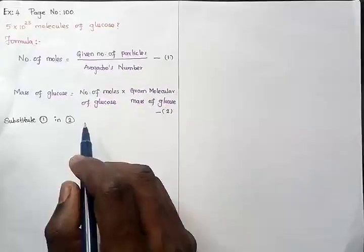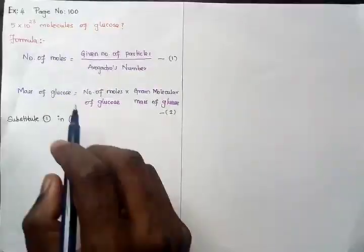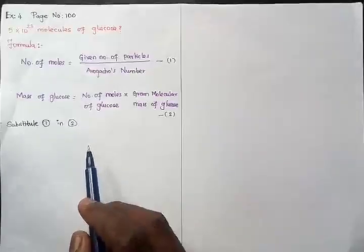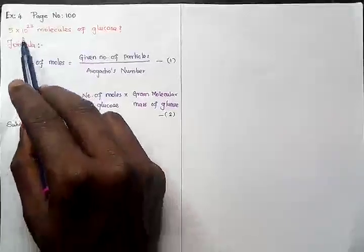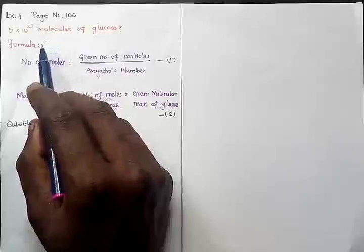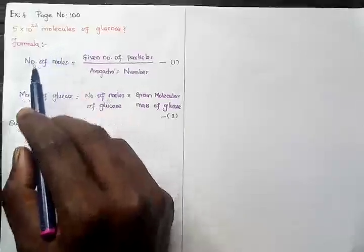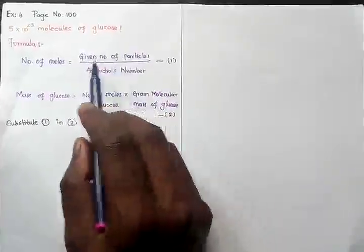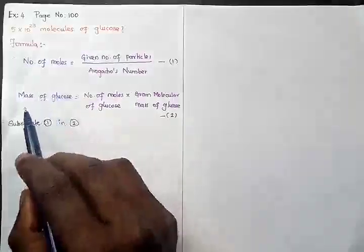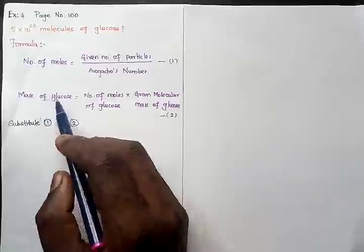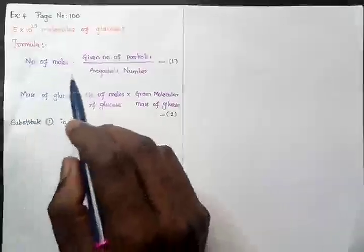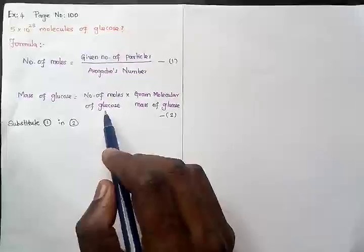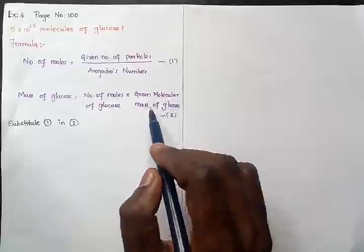Now, 5 × 10²³ molecules of glucose — this is given in the page number 100, example number four. What is the formula for calculating number of moles? The number of moles, if the number of particles — number of molecules, atoms, or ions — is given, equals the given number of particles divided by Avogadro's number. Then the mass of glucose equals number of moles of glucose multiplied by gram molecular mass of glucose.